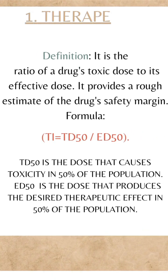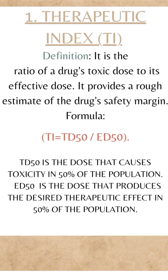1. Therapeutic Index (TI). Definition: It is the ratio of a drug's toxic dose to its effective dose. It provides a rough estimate of the drug's safety margin.